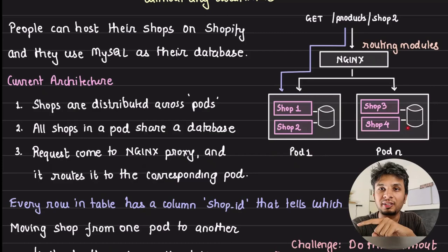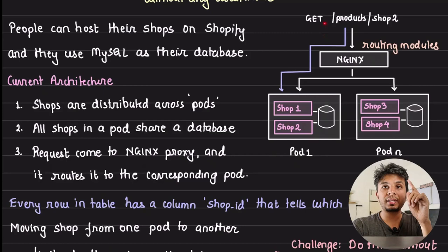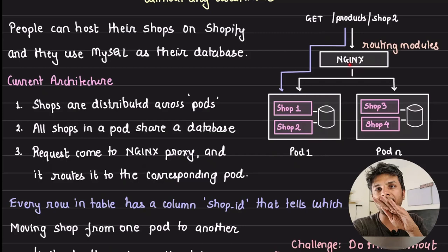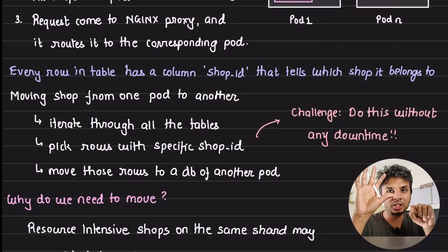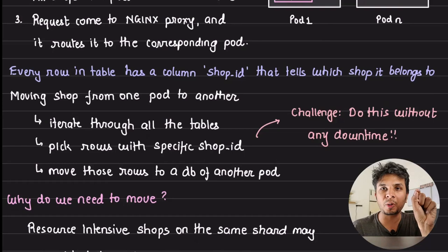Shop 3 and shop 4 share a different database. These two databases have no data in common — they are MySQL shards. When a request comes from the front-end, Nginx's routing module decides where to forward it; the request goes to the corresponding pod and is served from that pod's database. Within each database, every table has a shop ID column to identify which row belongs to which shop.